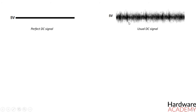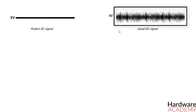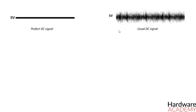Basically, the signal is usually imperfect. When coming from a power source, there are all types of interferences, which are AC signals, that come into play and superimpose on the DC signal, making the signal noisy. What we want is to decouple these noises, which are AC signals, from the DC signal, allowing for a much cleaner DC signal.